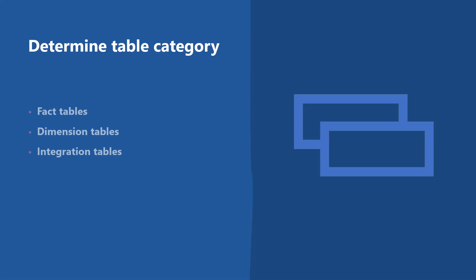To minimize the size of a large fact table, the customer's name and address don't need to be in every row of a fact table. Instead, the fact table and the dimension table can share a customer ID. A query can join the two tables to associate a customer's profile and transactions.